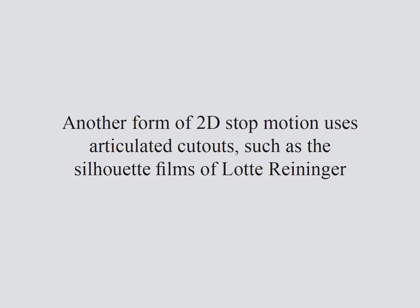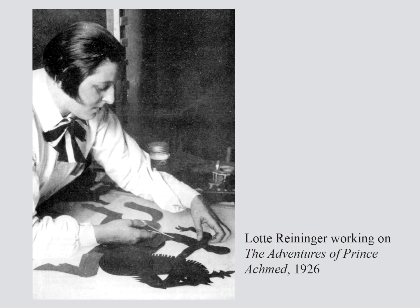A more controlled and repeatable form of stop motion uses articulated cutouts. The Adventures of Prince Achmed is of course a prime example. Reininger's method was to create silhouettes by cutting out opaque shapes and lighting them from below. Other artists have created cutout animations that were fully rendered — you can take a drawing, engraving, or other image, cut it out, connect it with pins to articulate it, light it from above, and get the illusion of a moving drawing or painting.